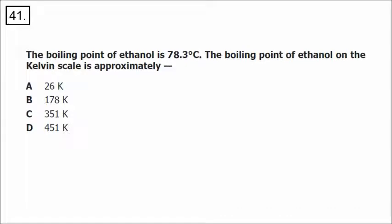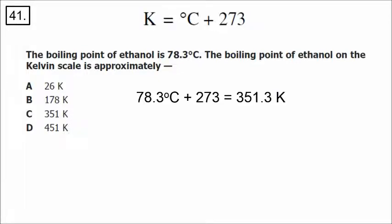Number 41: to go from Celsius to Kelvin, you add 273. So 78 plus 273 gives the answer 351 Kelvin.